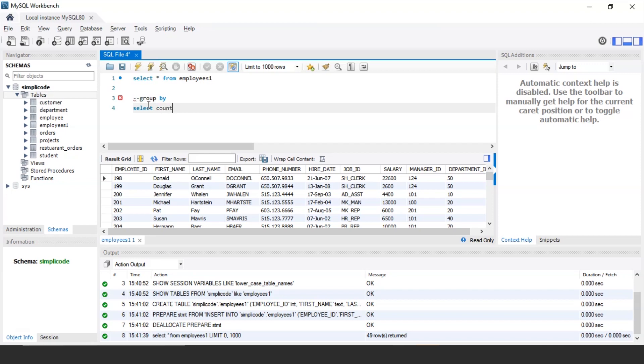COUNT, COUNT employee ID AS total, comma, I want to display their department ID as well.